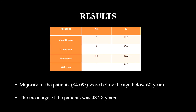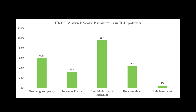Majority of patients were below the age of 60 years, and the mean age of patients was 48.28 years. The most common HRCT Varic score parameter found was interlobular septal thickening, seen in 96% of patients, followed by ground glass opacity in 60%, honeycombing in 44%, and irregular pleura and subpleural cysts in 32% and 4% of patients respectively.